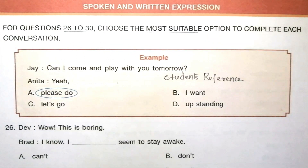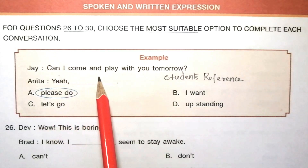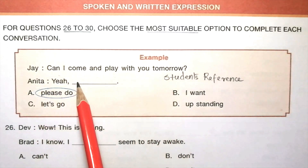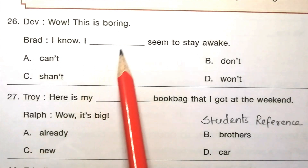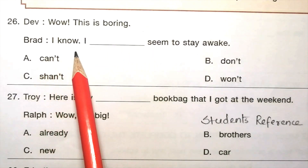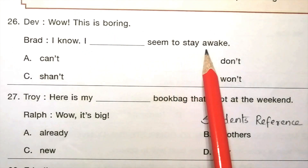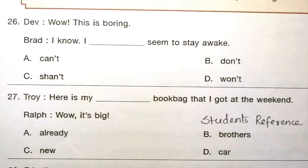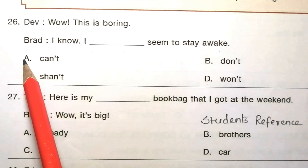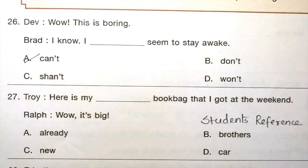Next topic is spoken and written expression. For questions 26 to 30, choose the most suitable option to complete each conversation. Question 26: 'Wow, this is boring.' Brad: 'I know, I dash seem to stay awake.' Options: can't, don't, shan't, won't. The answer is A, can't. 'I know, I can't seem to stay awake.'